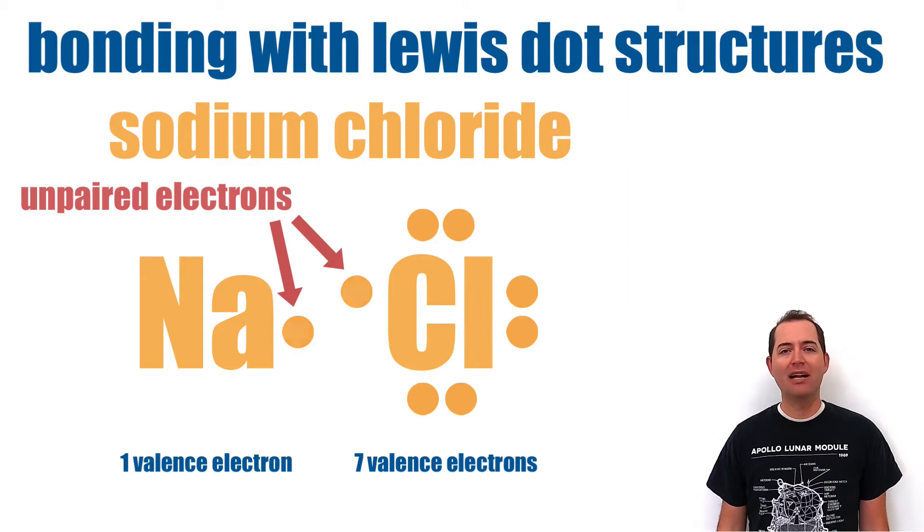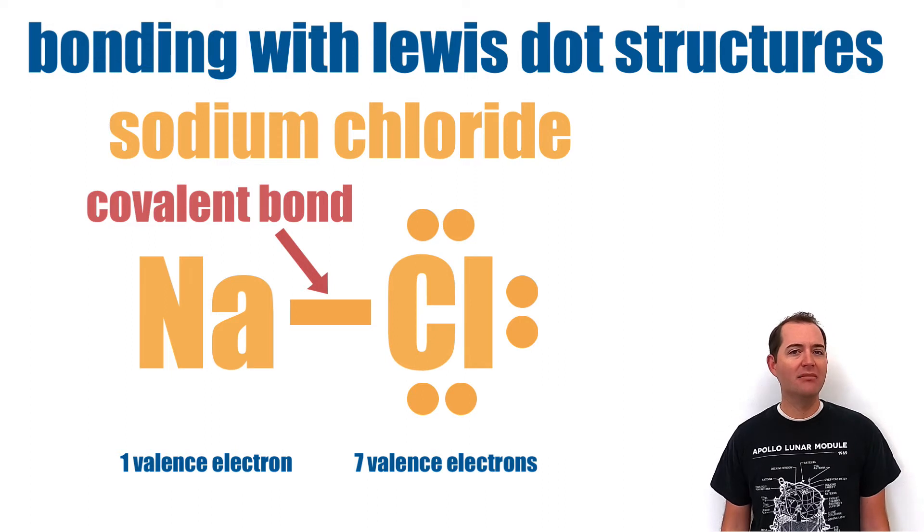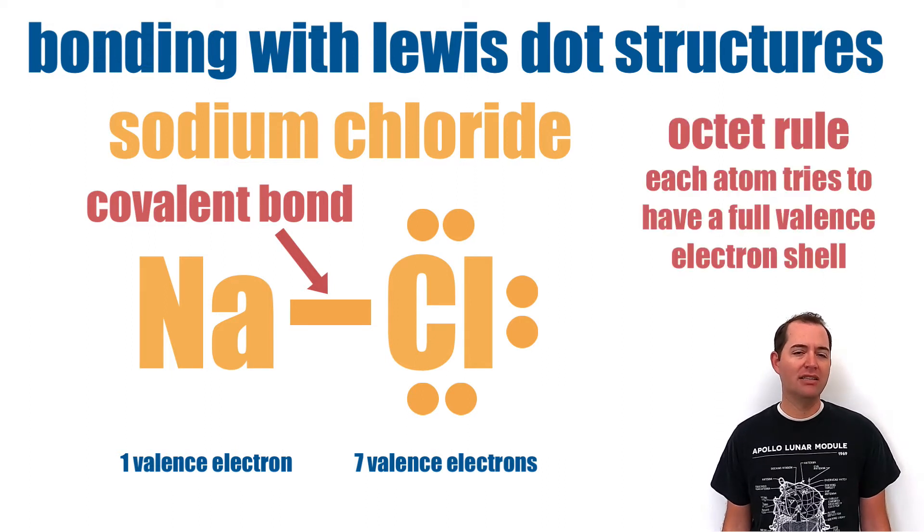Unpaired electrons from separate elements can come together to make a covalent bond. This is done so that each element in a molecule can meet the octet rule or have a full valence electron shell.